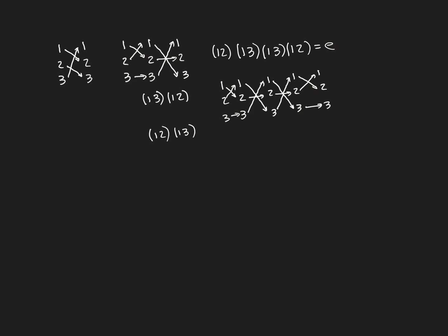Overall, this gives the identity, and that is why (1, 3) composed with (1, 2) is the inverse of (1, 2) composed with (1, 3). This generalizes to much more complicated permutations made up of many more transpositions: to invert them, all you need to do is reverse the order of the transpositions, and they cancel off one after the other.